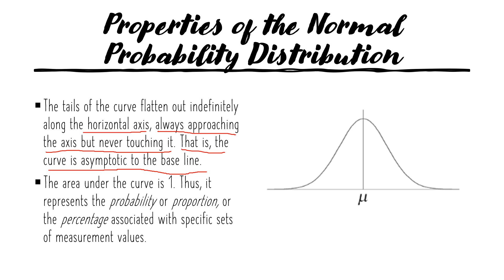This means the curve is asymptotic to the baseline, or horizontal axis. At some point, the normal curve becomes parallel to the horizontal axis, meaning there is no point of intersection between them. The last property: the area under the curve is equal to 1, representing the probability, proportion, or percentage associated with specific sets of measurement values. When checking a probability distribution table, the total sum of probabilities must equal 1.